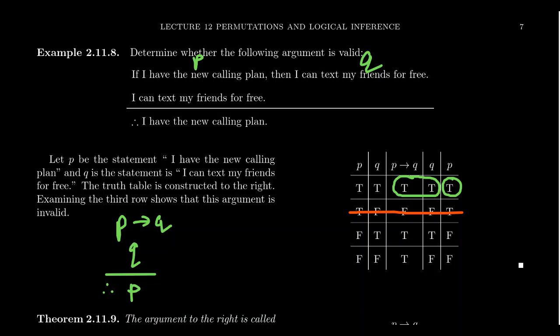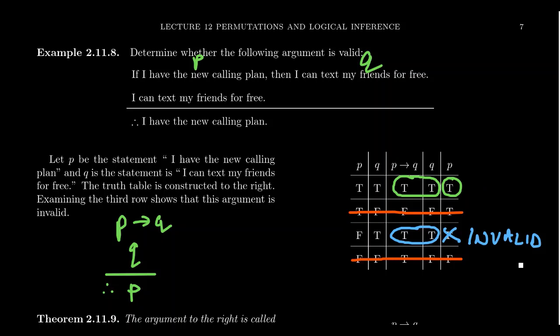It's the third row that is of consequence here. In the third row, both premises are true — true and true — but the conclusion is false. This is evidence that the argument is invalid. Sure, there was a row where the conclusion was true when the premises were true, but more importantly there is a row where the premises are true but the conclusion is false. This tells us that the truth of the premises does not guarantee the truth of the conclusion. The conclusion could be true or it could be false — we cannot guarantee its truth, and therefore this is an invalid argument.